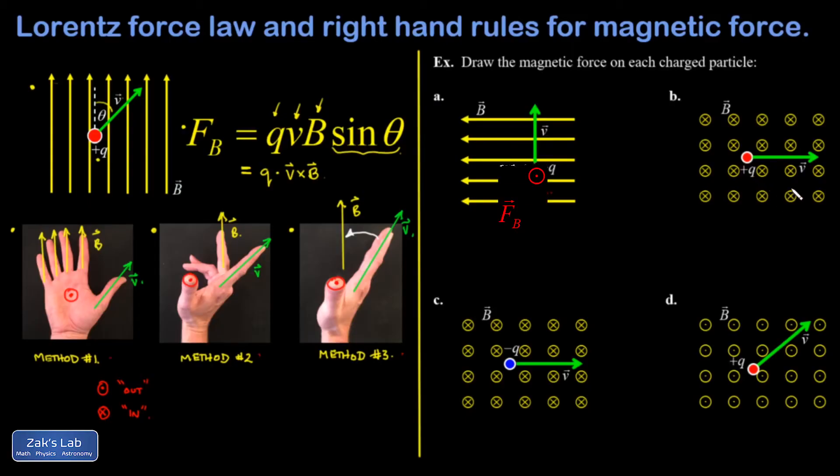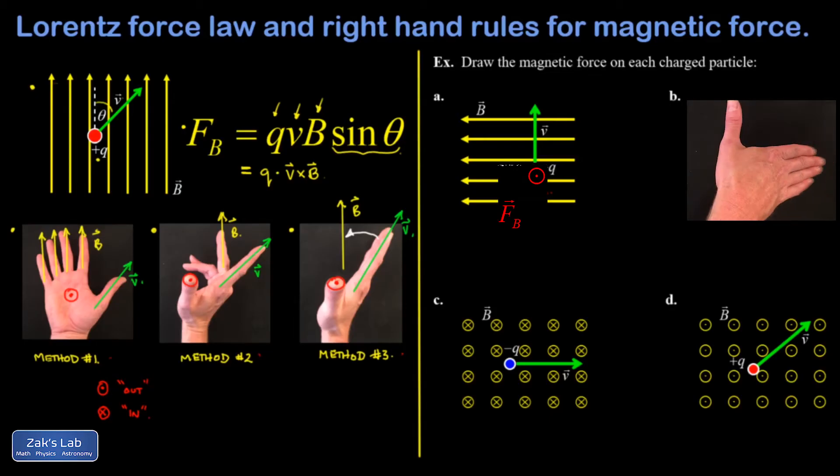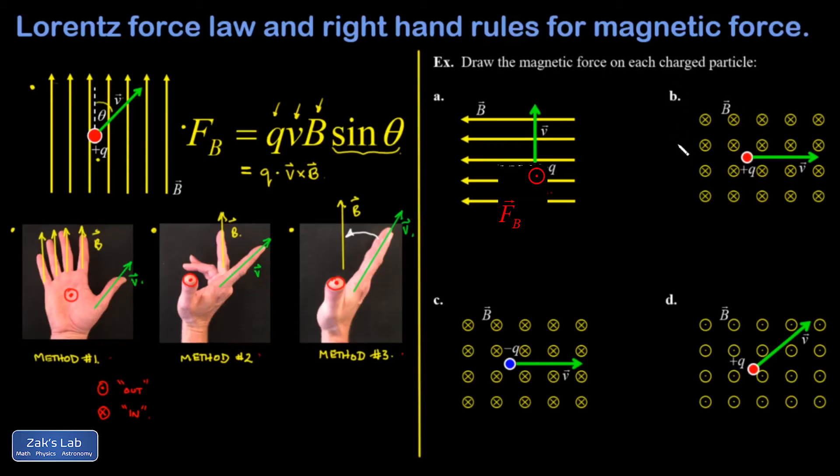In example B, I have a magnetic field into the page and a velocity to the right. I figure out how to orient my right hand so I can sweep my fingers out from the direction of V to the direction of B without spraining my wrist. And the only way to do that is for my thumb to be pointing upward. So there's the direction of the force again.